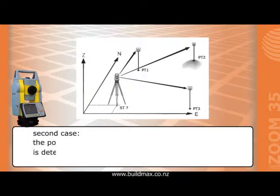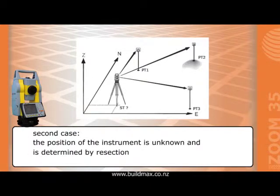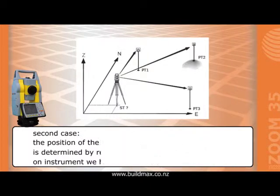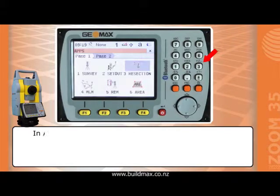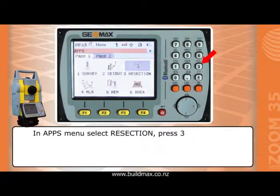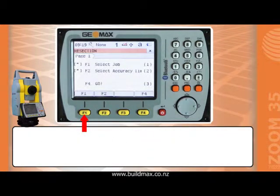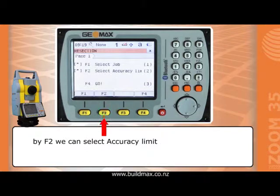Second case: the position of the instrument is unknown and is determined by resection. On the instrument we have a job with a list of known points. In the Apps menu select Resection and press 3. By F1 we select the job where we will save our measurements, and by F2 we can select the accuracy limit.